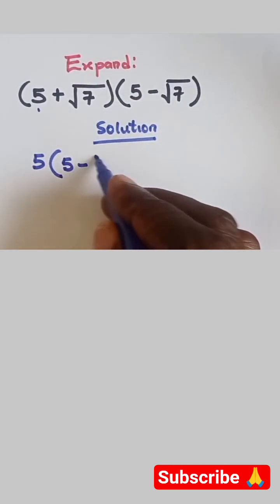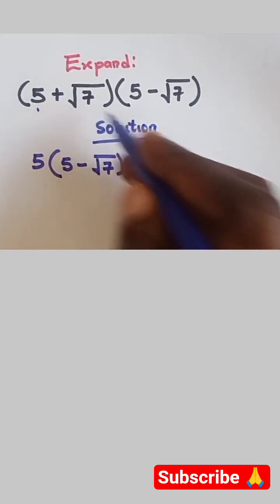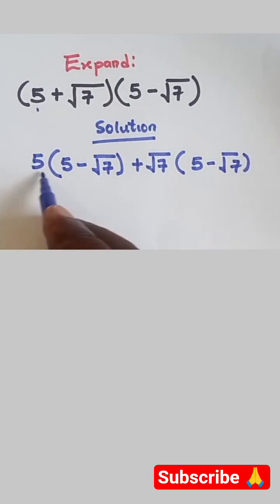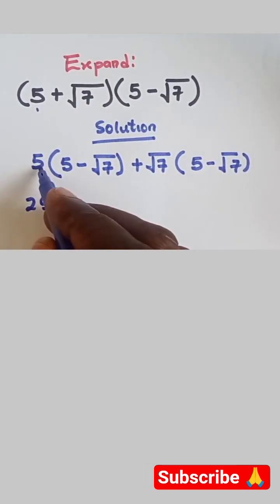Write the second bracket: (5 - √7), and then repeat the other +√7 left in the first bracket, then write the second bracket again. Now, 5 times 5 is 25, minus 5...